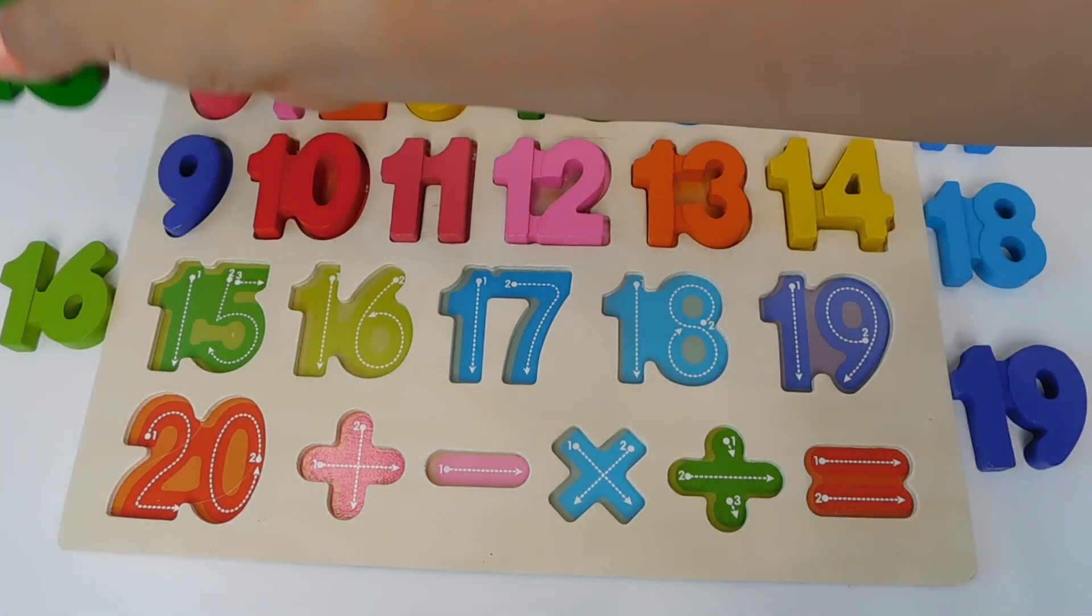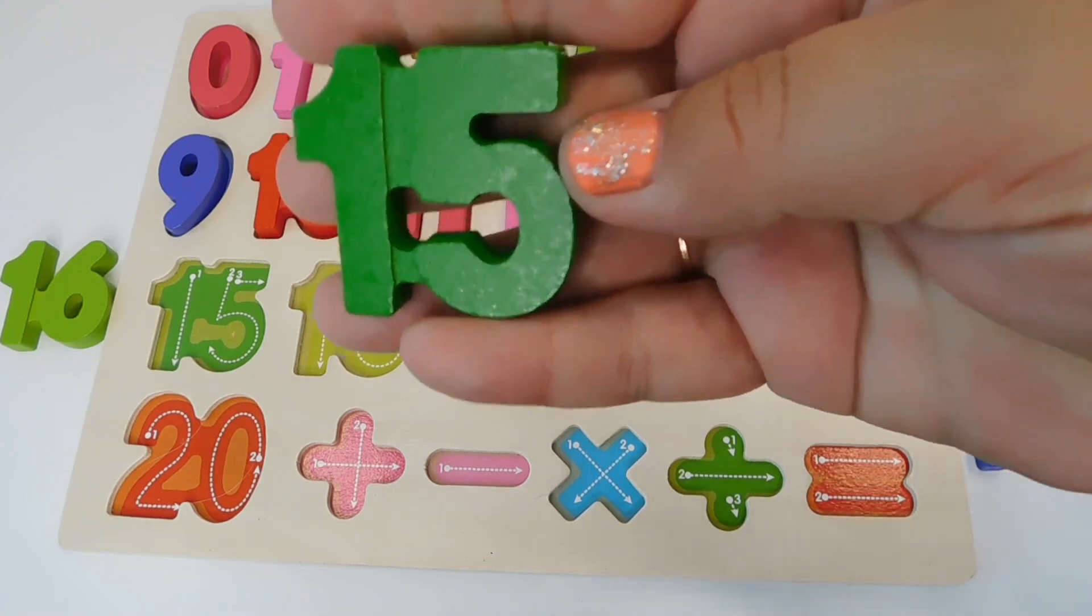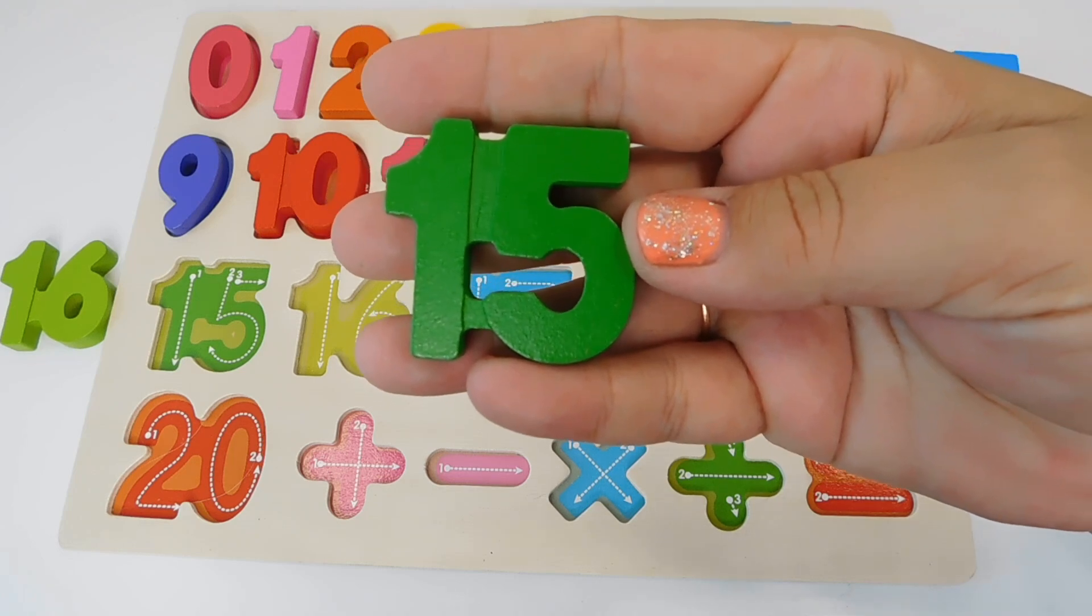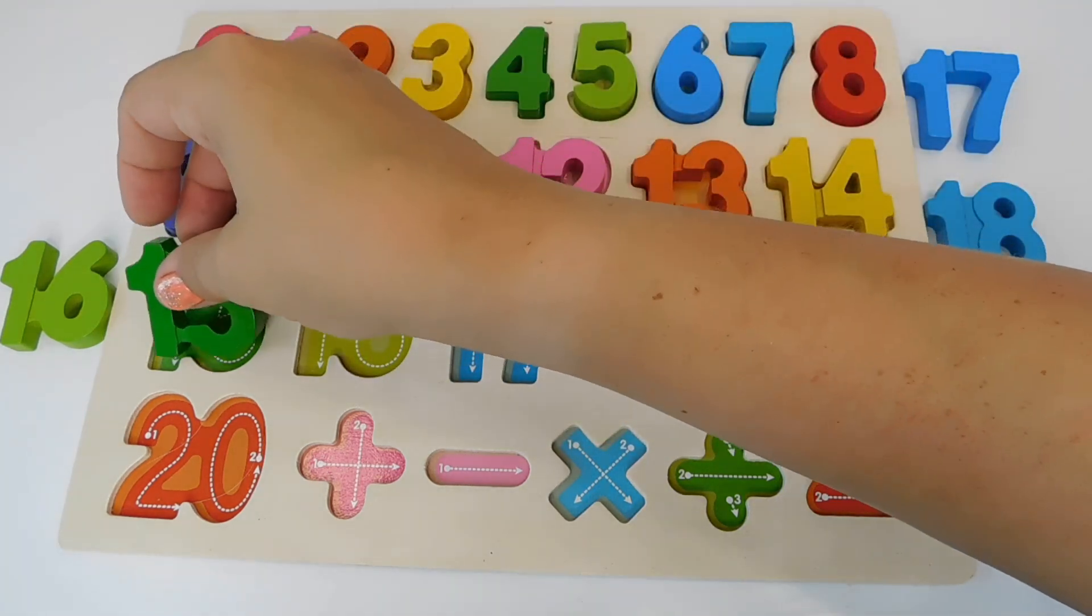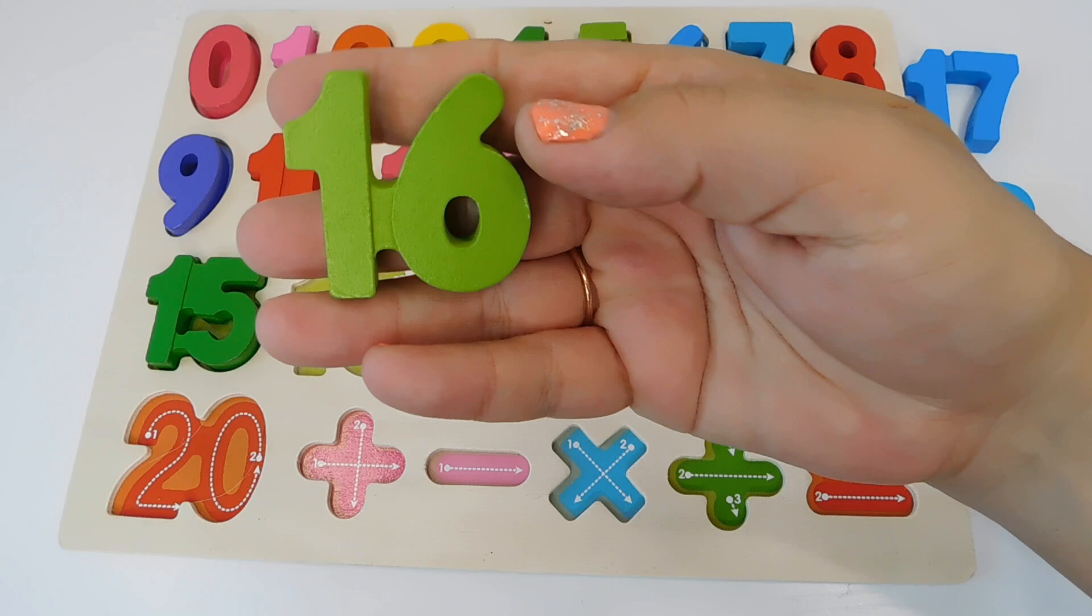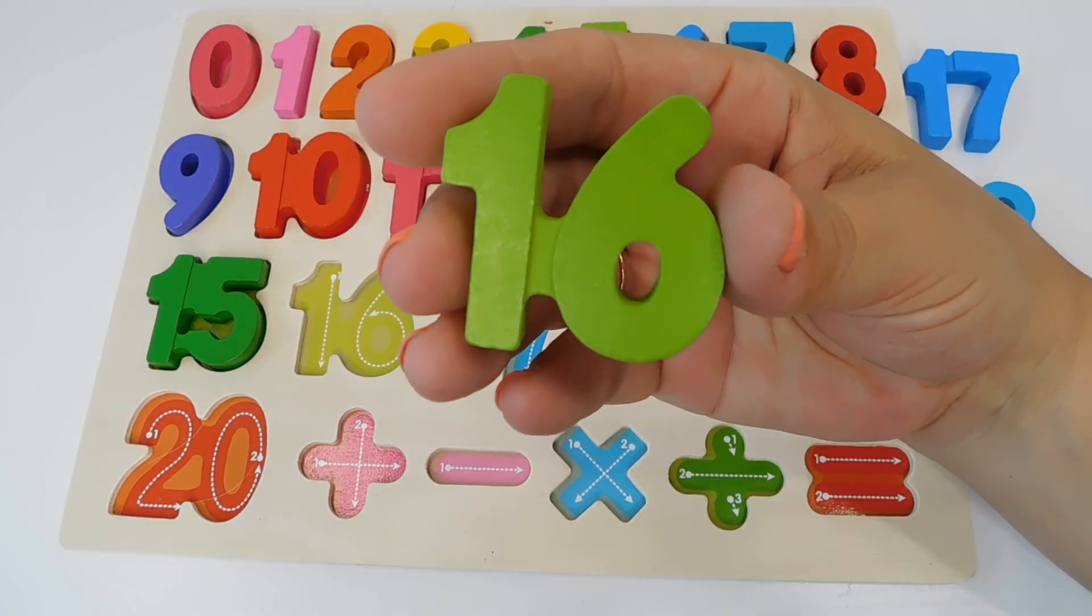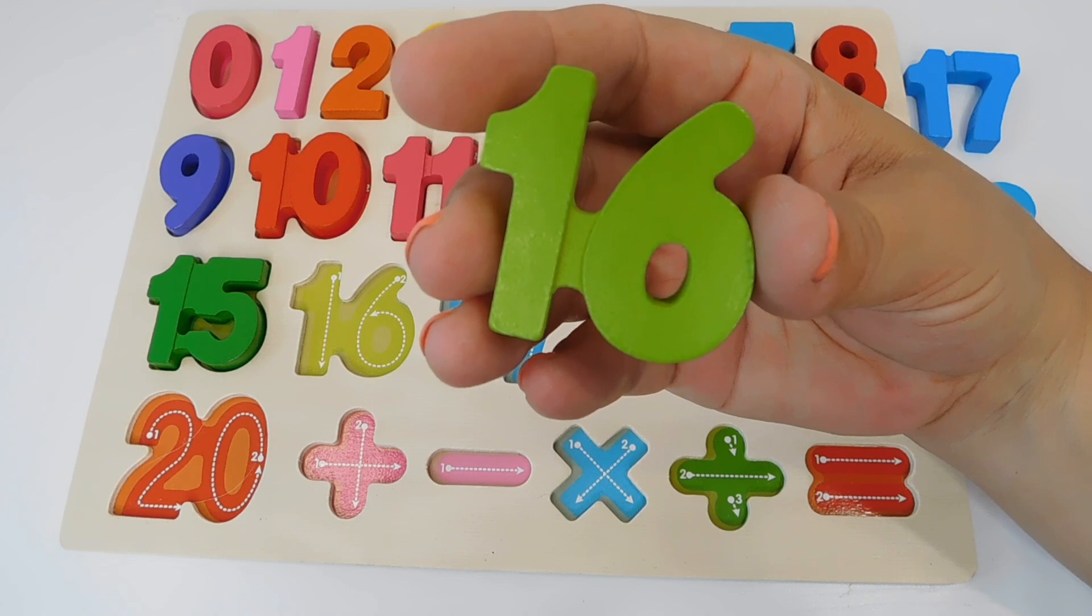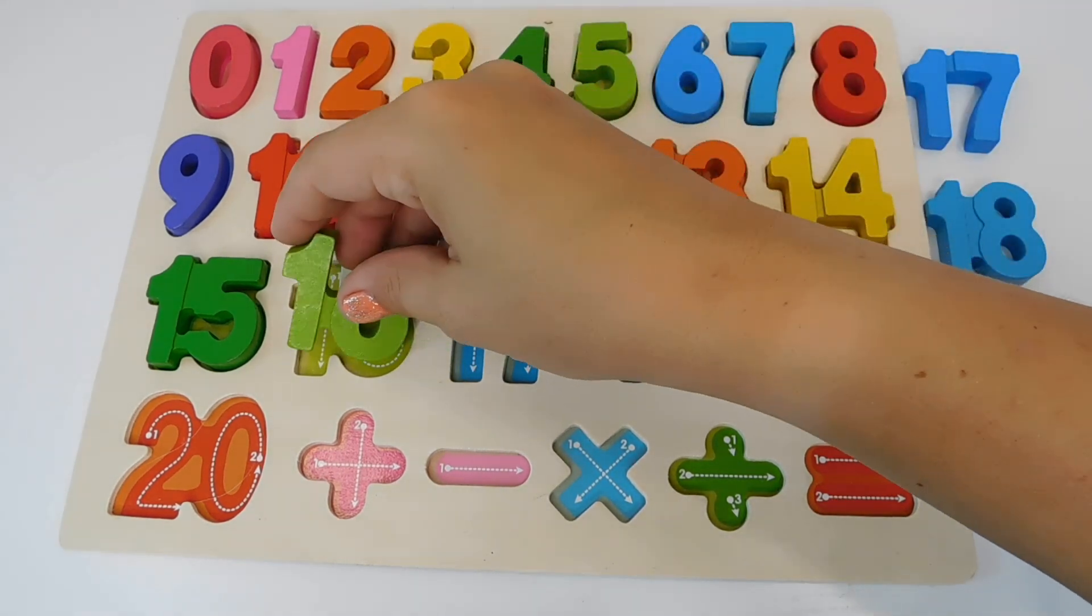Our next number is number 15. And this is green. 15 has a 1 and a 5. Green 15. Next is number 16. This is light green. 16. 1 and 6. 16 goes here.